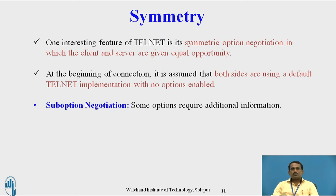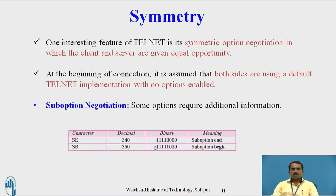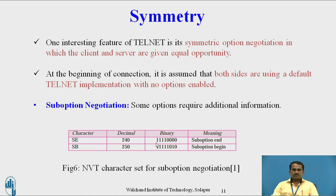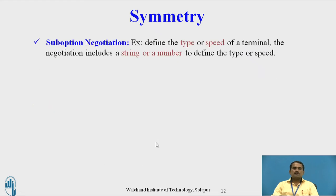Sub-option negotiation: some options require additional information — character, decimal, binary, and meaning. SE (sub-option end) and SB (sub-option beginning) are used. For these we use decimal values 240 and 250. Example: to define the type and speed of the terminal, the option negotiation includes a string or number to define the type or speed.